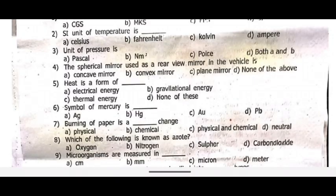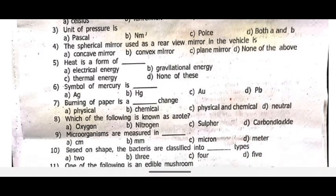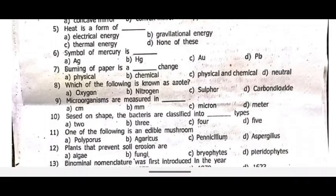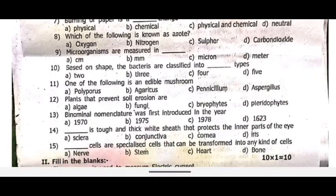The spherical mirror used as a rear view mirror in the vehicle is dash. Heat is a form of dash. Sixth one, symbol of Mercury is dash. Bumping of paper is a dash change. Which of the following is known as erota? Microorganisms are measured in dash. Succeed on shape.